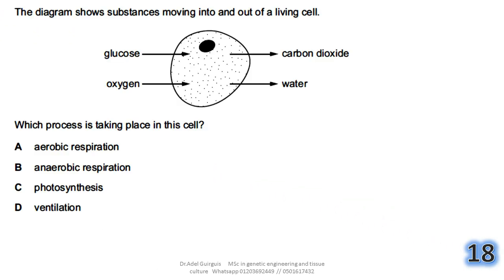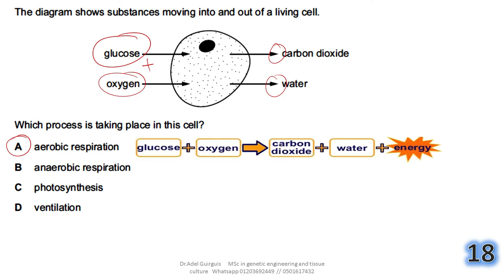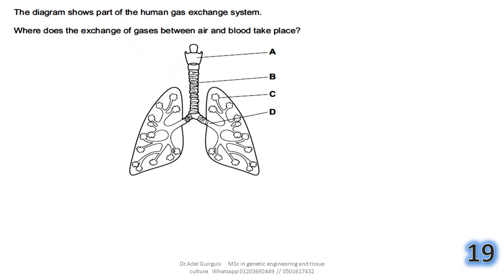Question 18: the diagram shows substances moving into and out of a living cell — glucose and oxygen entering, carbon dioxide and water leaving. This represents aerobic respiration: glucose + oxygen → carbon dioxide + water + energy.